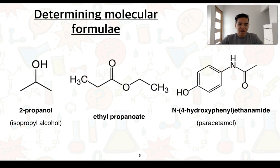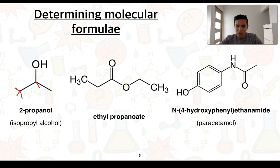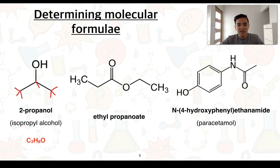We have three examples. We're going to start with 2-propanol, also known as isopropyl alcohol. Typically we start with the carbons, followed by the hydrogens, and then any other atoms. Looking at 2-propanol, we can see there are three carbon atoms. A technique I'd like you to employ is to fill in the remaining carbon-to-hydrogen bonds, which makes it easier to count the hydrogens. The first carbon has one carbon-to-carbon bond, so it needs three more bonds to hydrogens. The second carbon has three bonds, so it needs one more to a hydrogen. The third carbon gets another three hydrogens. So three carbons, eight hydrogens, and one oxygen — its molecular formula is C3H8O.